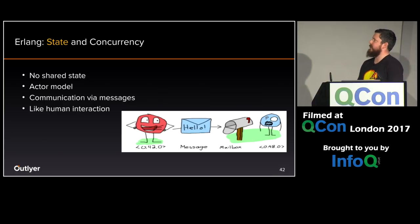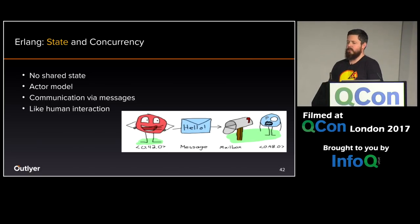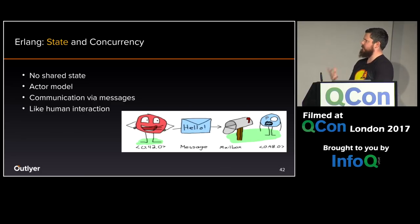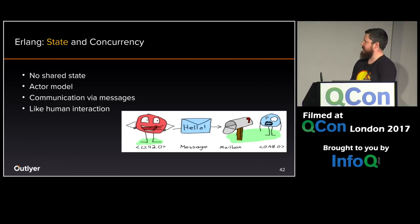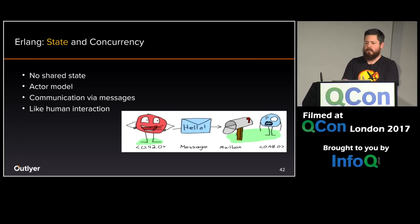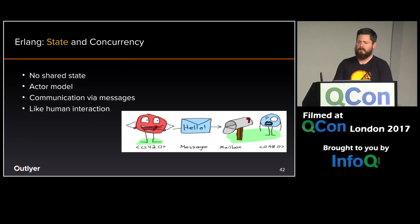The actor model here really closely aligns with general human interaction — nobody shares a brain, you communicate by sending messages. This really helps protect your state and works well for scaling. Because state is defined in individual processes, when you need to scale out to multiple cores and multiple machines, there's a lot less work involved, and Erlang takes care of some of that for you.